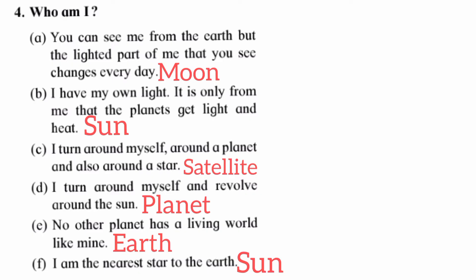Next question — identify who am I: A) You can see me from the earth but the lighted part of me that you see changes every day. Answer: Moon. B) I have my own light. It is only from me that the planets get light and heat. Answer: Sun.